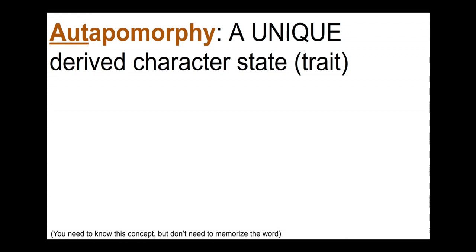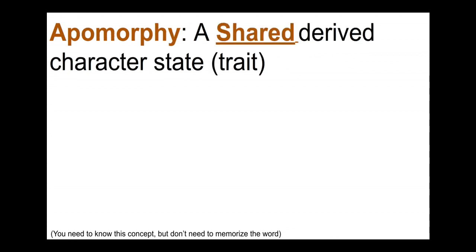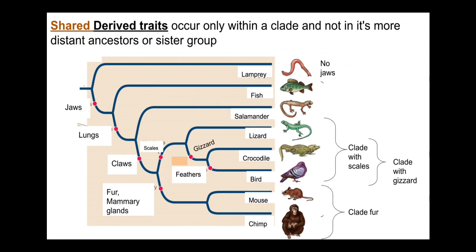Contrast that with an autapomorphy — 'auto' means self or own, like autonomous. An autapomorphy is a unique derived trait that is not shared. Think for a second: where are the apomorphies and where are the autapomorphies on this tree? What is an autapomorphy? There's an autapomorphy listed somewhere on this tree — think about that for a second; pause the video if you have to.